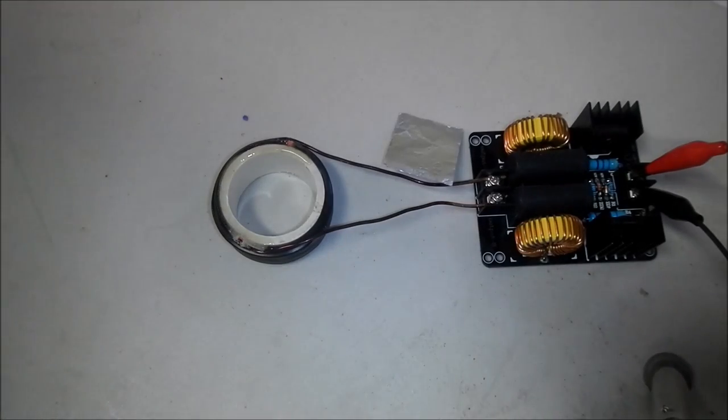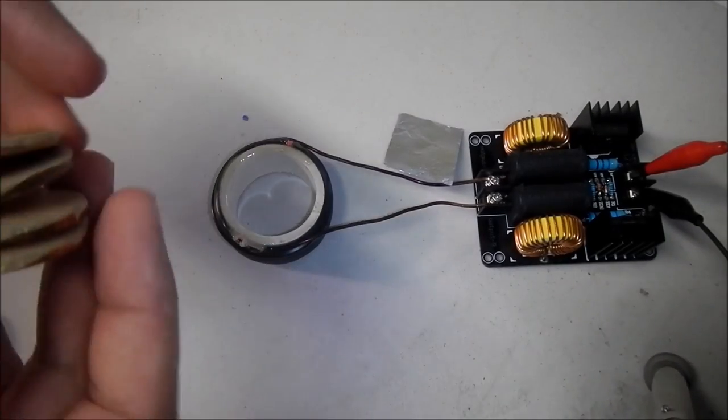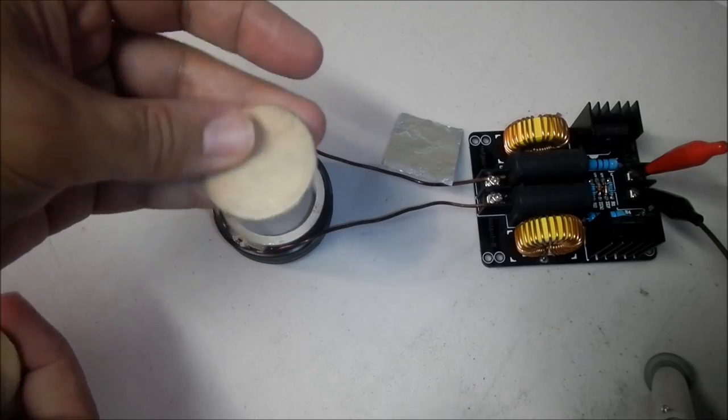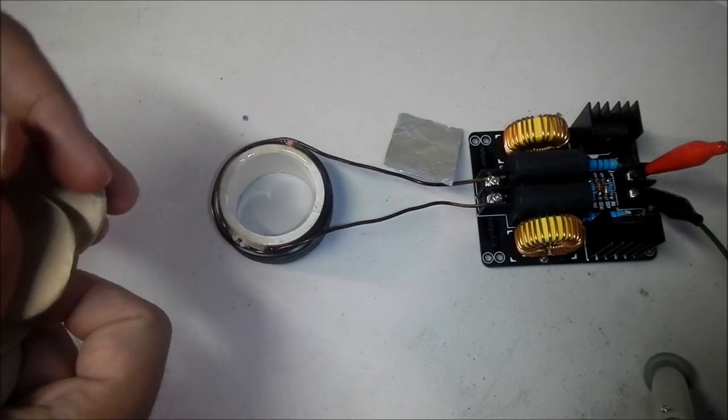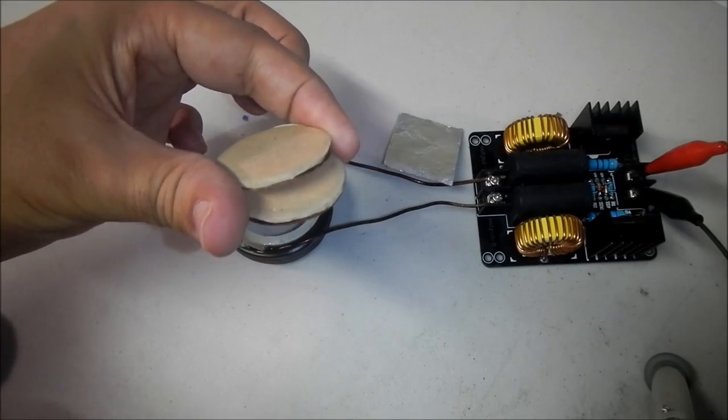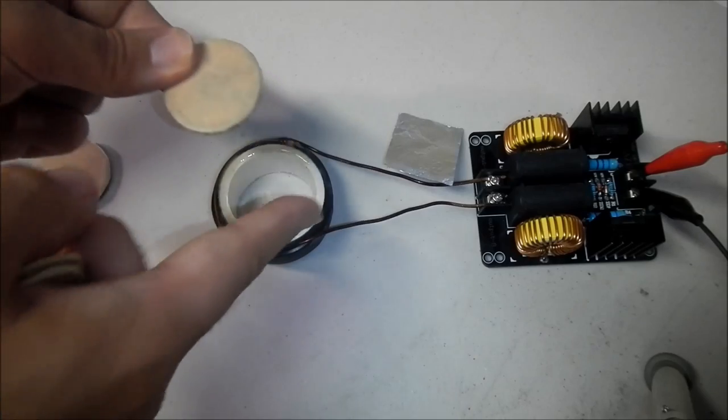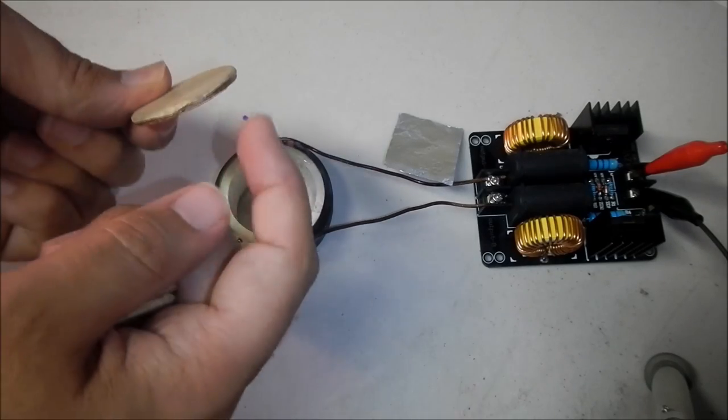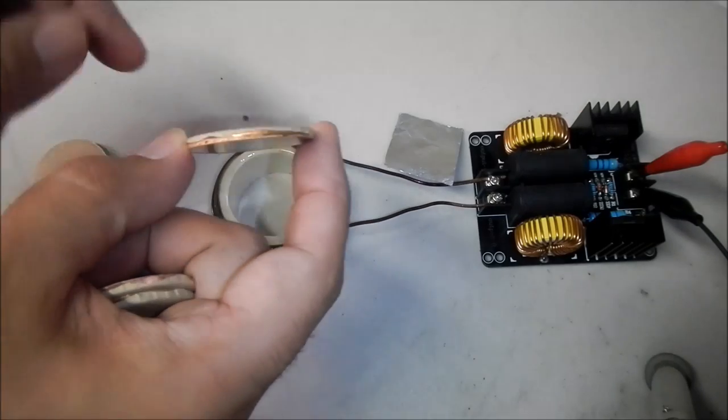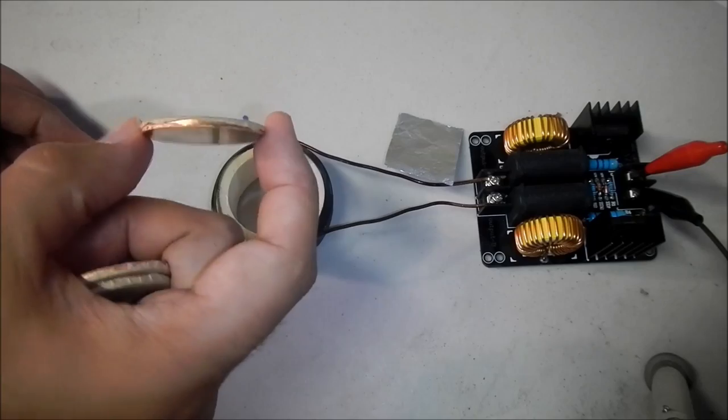So now what I'm going to do is insert some of these copper disc slugs. I just put a piece of tape on one side so that electrically insulates it from the next slug. So each one of these copper slugs is going to have currents induced by the main coil. Currents are going to circulate inside the copper.